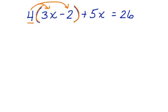4 times 3x is 12x minus 4 times 2, which is 8. We can bring plus 5x down, and on the right side of the equation we have 26.